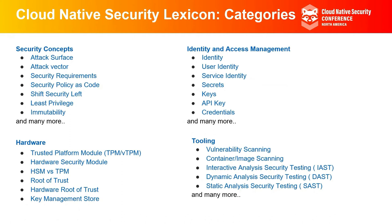The first section covers typical security concepts such as attack surface, attack vector, security requirements, least privilege, immutability, compliance, and so on. The second section covers key topics in IAM such as identity, user identity, service identity, secrets, credentials, certificates, and so on. The third section covers hardware devices designed to enable security functionality, such as trusted platform module, virtual trusted platform module, hardware security module, root of trust, hardware root of trust, and so on.